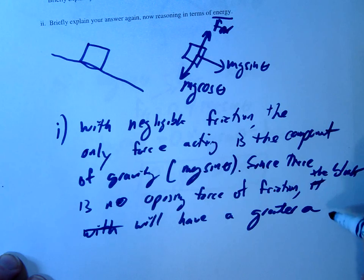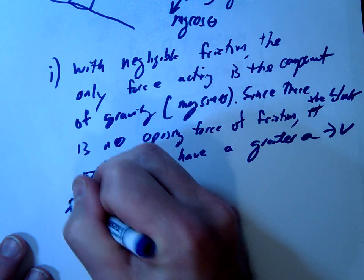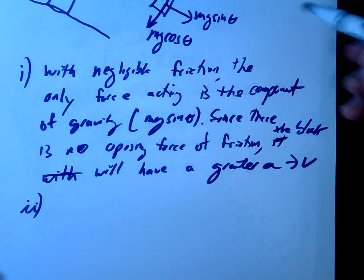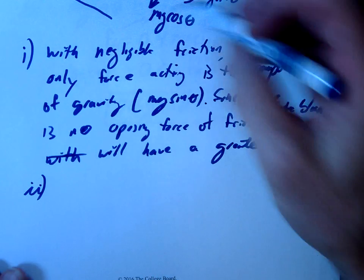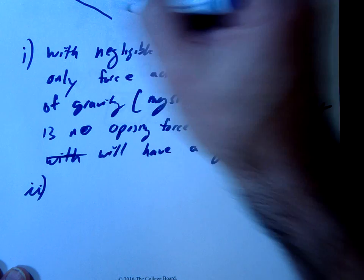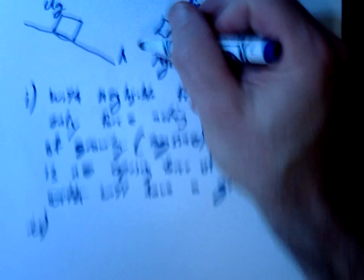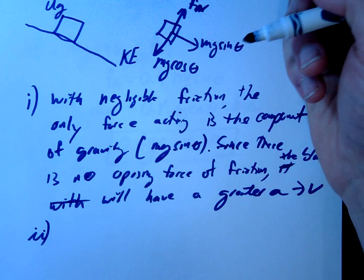Again, if this is a real test, I might spend a little bit more time explaining that. Alright, question two, what about in terms of energy? Well, in terms of energy, they both have potential at the top. But this block has only kinetic at the bottom. So it starts with all potential, has only kinetic down here at the bottom.